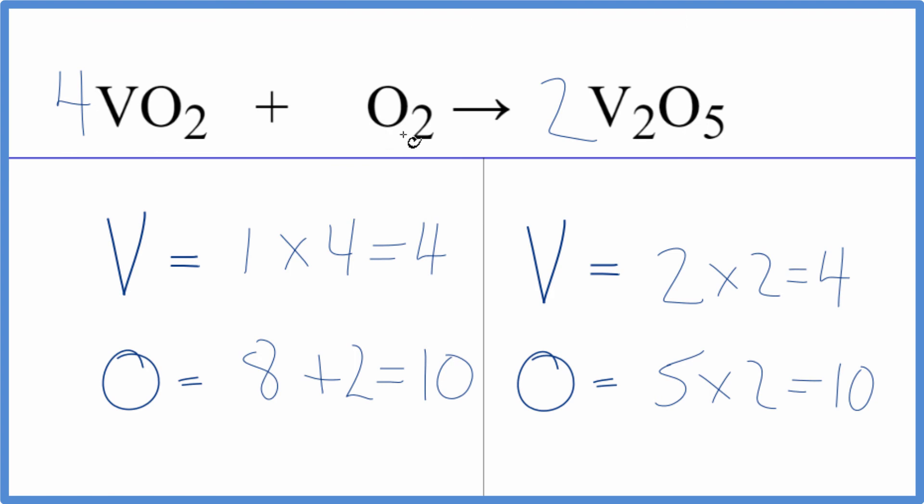The key here was to get this odd number of oxygens to an even number, then things just worked out. This is Dr. B with the balanced equation for vanadium four oxide plus oxygen gas. Thanks for watching.